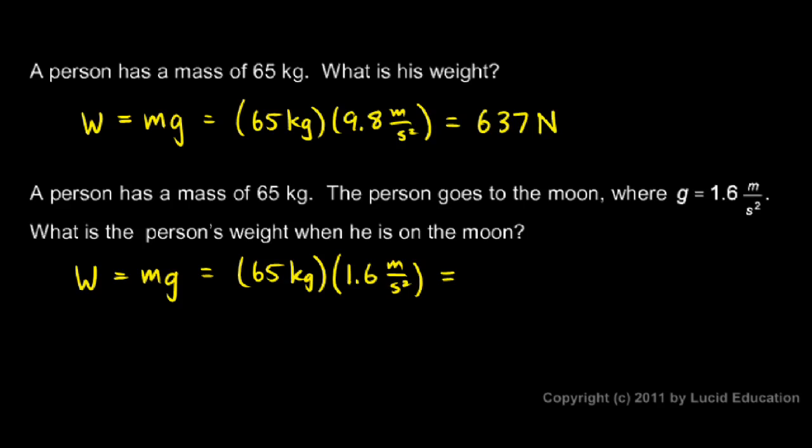65 times 1.6 comes out to 104, and again, that's kilograms times meters per second squared, which is newtons, 104 newtons. About 1 sixth what it is on the earth.